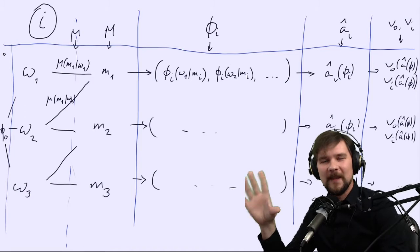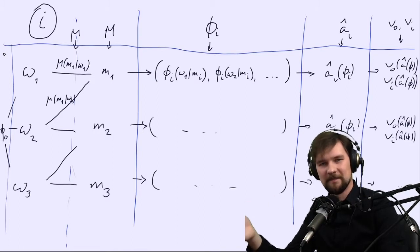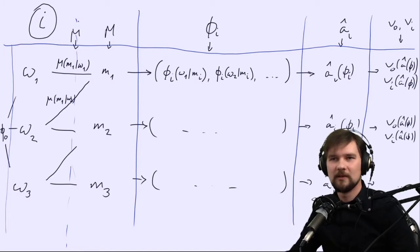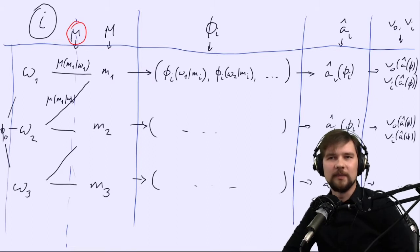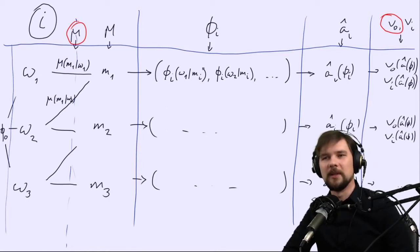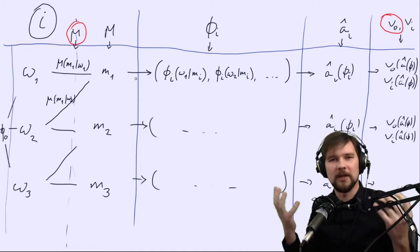So this is the framework we are working in and the question is how do we design the optimal experiment, the optimal informational mechanism? This is the object that we are choosing — μ — and we're choosing this μ in order to maximize the designer's utility v0. You can see there are a lot of intermediate steps we need to go through, and we would like to basically cut these extra steps out to make the problem more direct, more immediate.